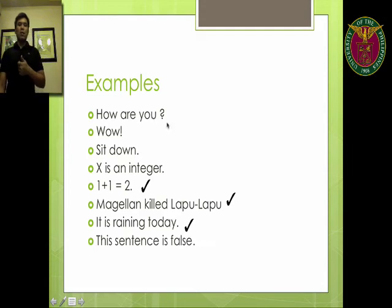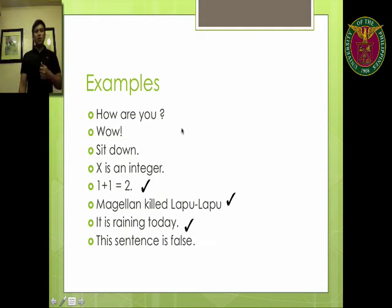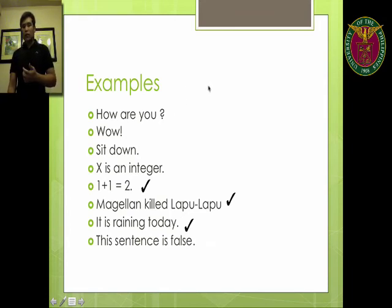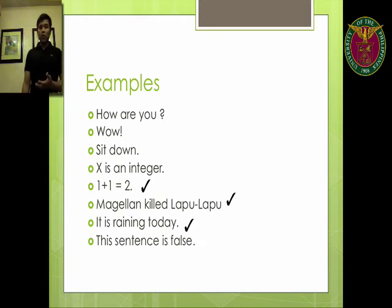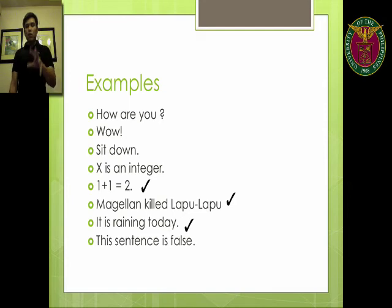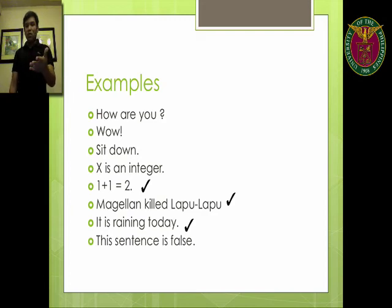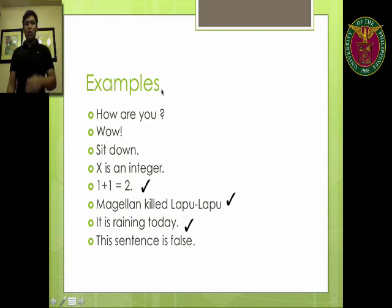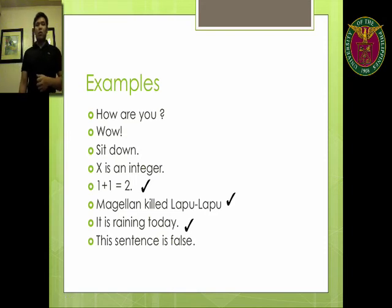Here is the last example: 'This sentence is false.' First we look at the form — it's a declarative sentence, so it might be a proposition. But does it have a truth value? If this statement is true, then it's also true that this sentence is false, meaning it's false. So it's true and false at the same time. We said a proposition can only be true or false but never both. So this sentence is both — that is why it is not a proposition.